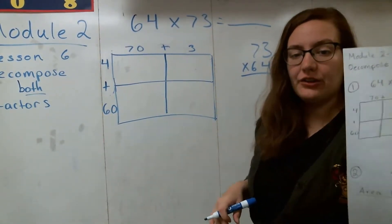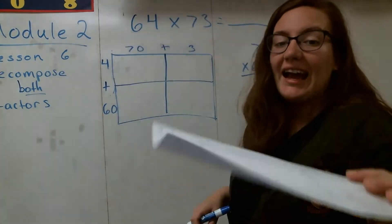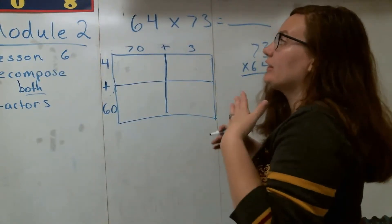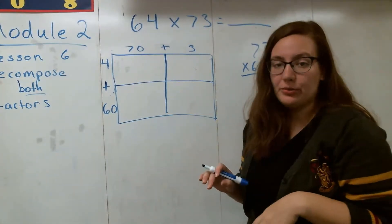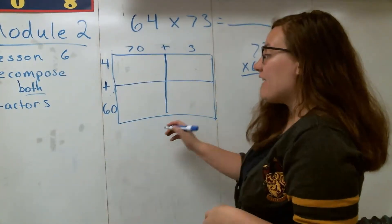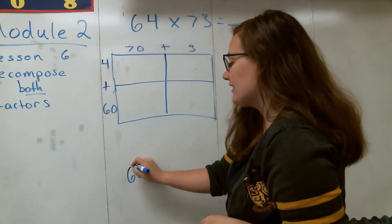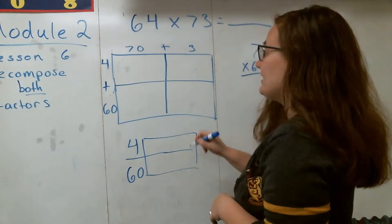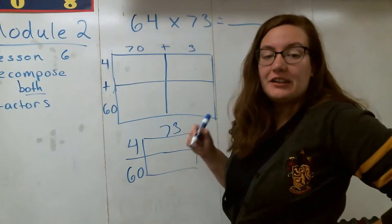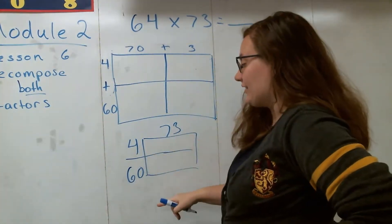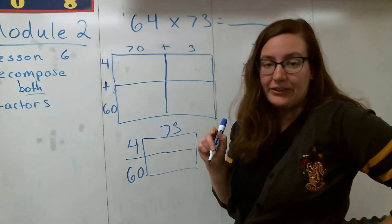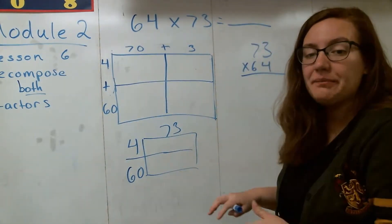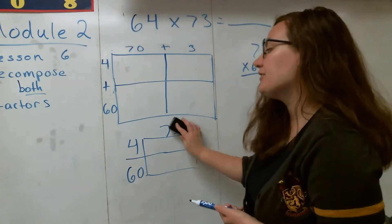You should be following along on the notes right here. You'll see that our area model looks a little bit different right now. The reason why we split it up so much more than last time is that it would be difficult to do 4 times 73 and then 60 times 73 in your head. So the way we did area models first is great for smaller numbers, but once we get into bigger numbers, it becomes difficult and we have to find a new method.